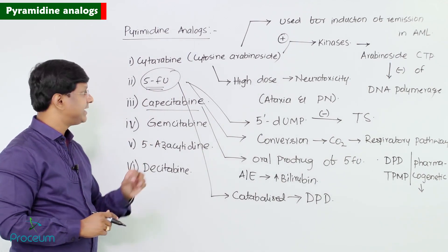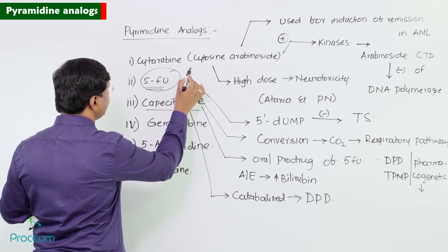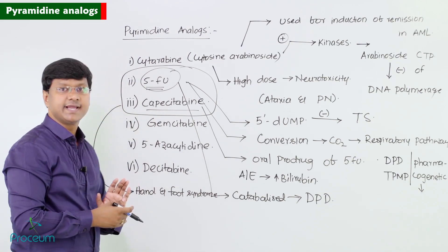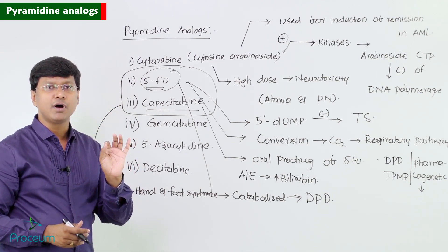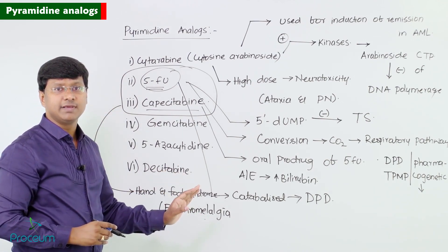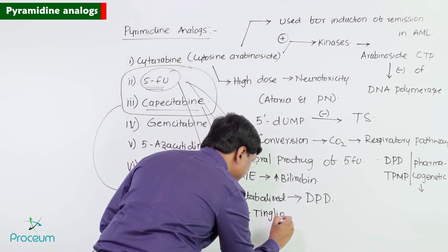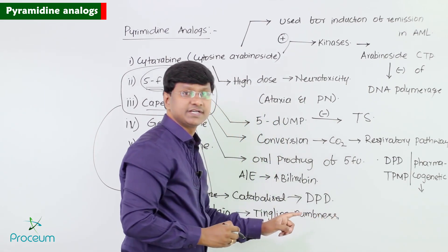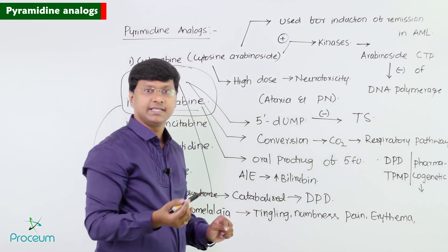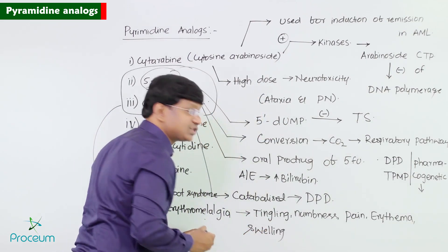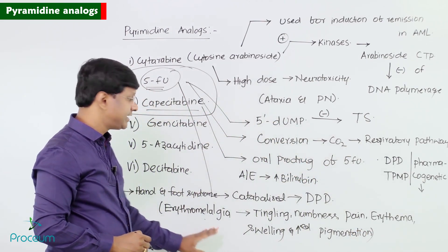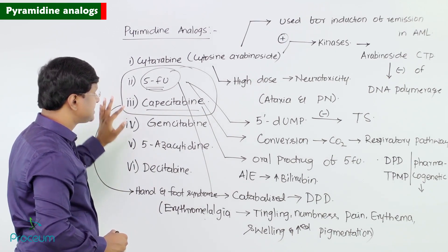Both Capecitabine and 5-fluorouracil can cause hand and foot syndrome, which is a form of erythromelalgia. This is manifested as tingling, numbness, pain, erythema, swelling, and increased pigmentation.